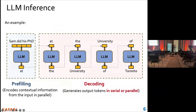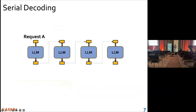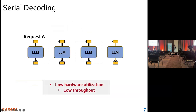So, decoding can be serial or in parallel. In serial decoding, an LLM generates tokens in request A one by one. Therefore, serial decoding leads to low hardware utilization and low throughput of LLM inference — that is not good.